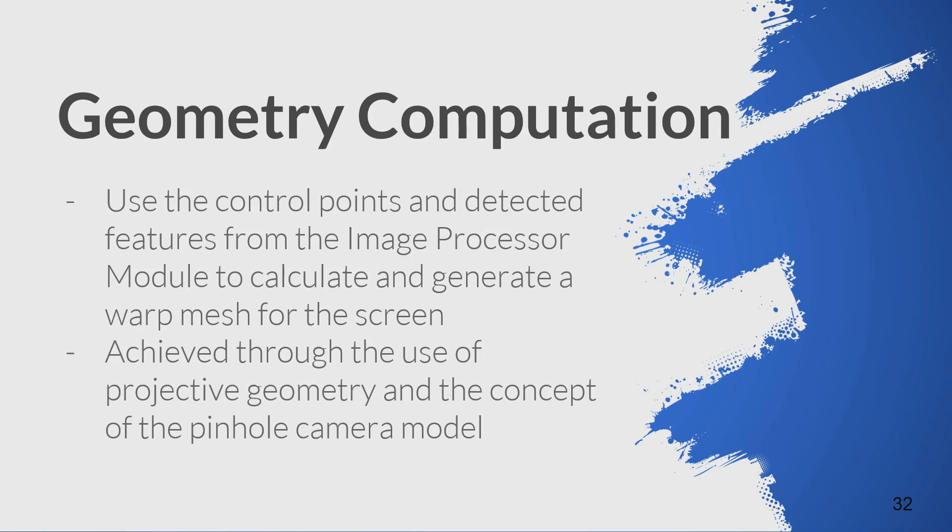The gridded test patterns show up a little differently — corners are shown in blue, and each of the centre points, either right in the middle of the screen or the centre of a particular side, are shown in red. The finer grid is processed as well. The next sequence is geometry computation, which uses the control points and detected features from the image processor stage to calculate and generate the warp mesh for the screen.